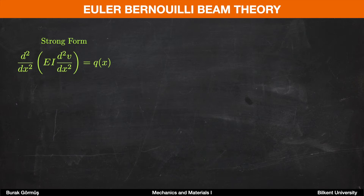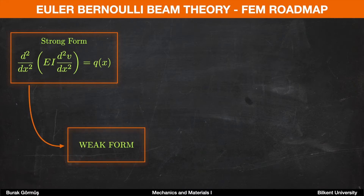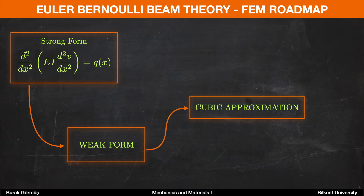While implementing the finite element method to solve problems, we generally follow a simple route. The first step of this route is to convert the strong form into a weak form by expressing the differential equation using integrals. After this step, we approximate the solution. For beam problems, we use Hermite-type shape functions and we assume that we can express the deflection as a cubic polynomial.